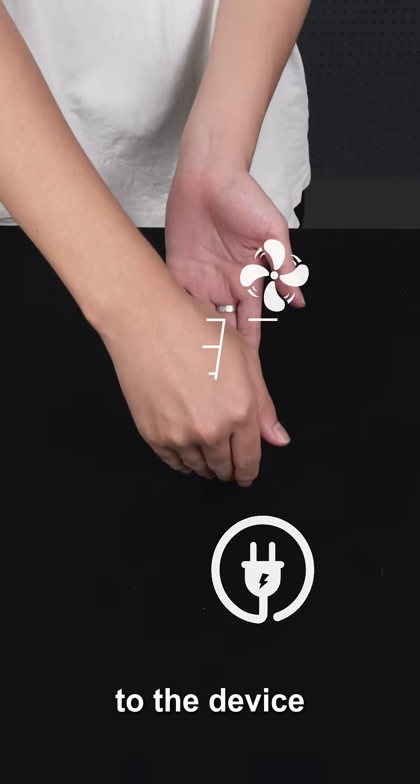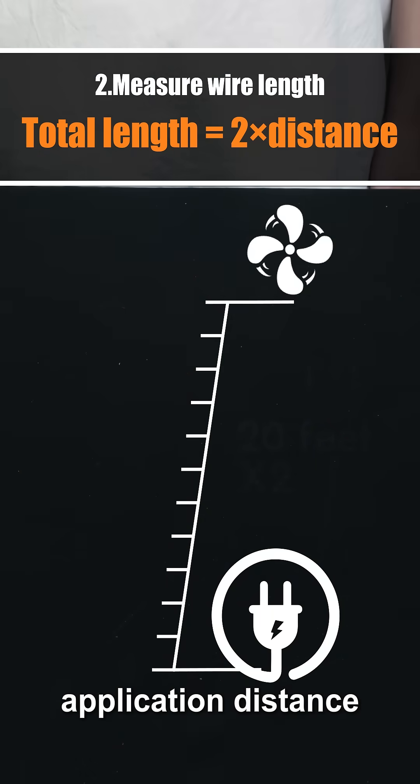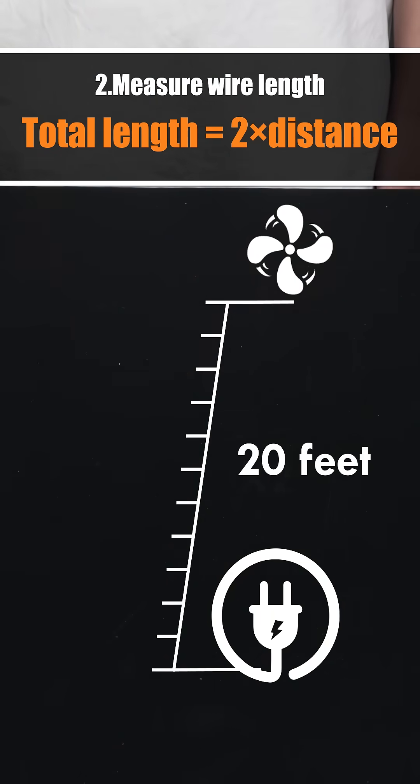From the power source to the device, the total cable length is usually twice the application distance. For example, if your setup requires a 20-foot run, you'll need a 40-foot wire - 20 feet for the positive lead and 20 feet for the negative. The longer the wire, the thicker the gauge should be to reduce voltage drop and heat buildup.